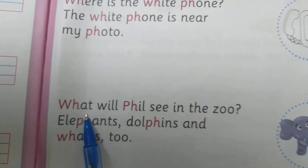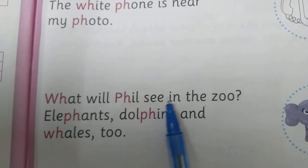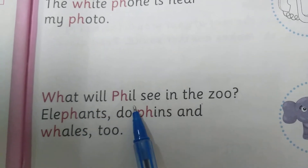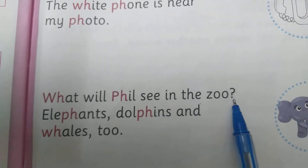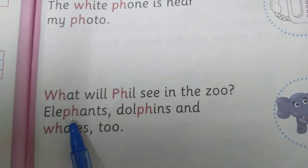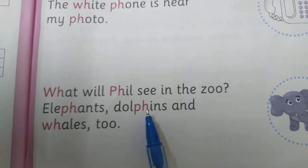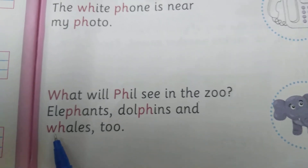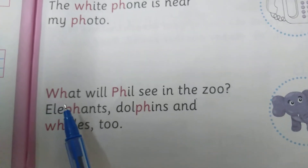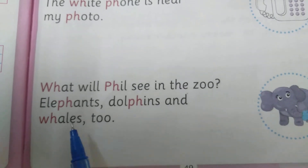Next one. W-H-A-T, what? W-I-L-L, will? P-H-I-L-I-P, Philip. S-E-E, see. I-N, in. T-H-E, the. Z-O-O, zoo. What will Philip see in the zoo? Question mark. Elephants, dolphins and whales too. E-L-E-P-H-A-N-T-S, elephants. D-O-L-P-H-I-N-S, dolphins. A-N-D, and. W-H-A-L-E-S, whales. T-O-O, too. What will Philip see in the zoo? Elephants, dolphins and whales too.